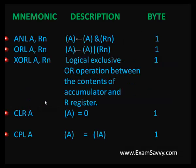The logical instructions are: logical AND, logical OR, logical XOR, clear, and complement. For logical AND — ANL A, Rn — we AND the accumulator content with the register content and store the result in the accumulator (destination operand). The size is 1-byte.